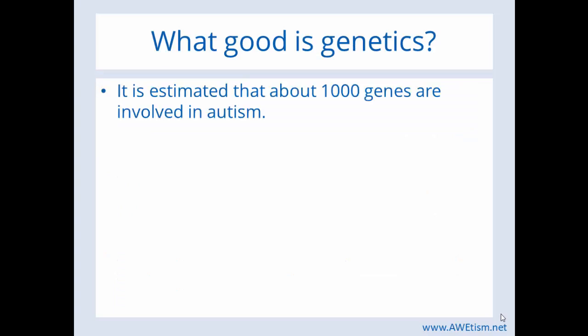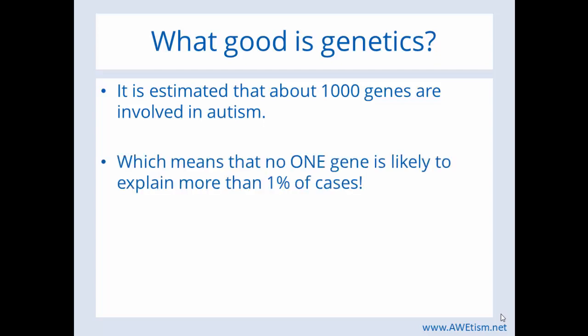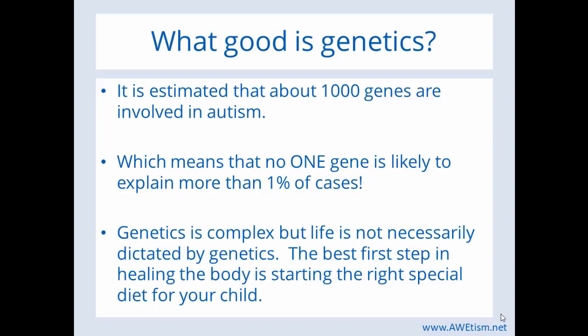So, what good is genetics? It's estimated that about a thousand genes are involved in autism, which means no one gene is likely to explain more than 1% of cases. The most important thing I hope you've learned from this video is that genetics is complex, yes, but life is not necessarily dictated by genetics. If you have your DNA screened and you see mutations and deletions, do not be concerned that this is how life is going to be — that's completely false. The best first step in healing the body is starting the right special diet for your child with autism.